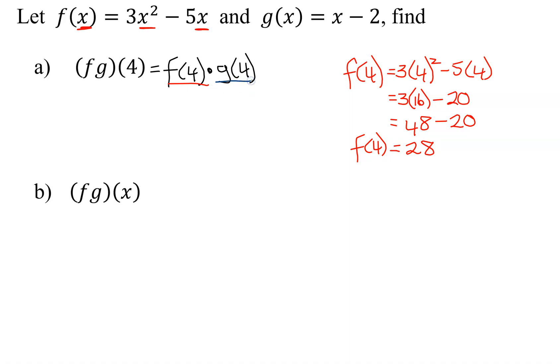Now I need to figure out g(4). g(4) is equal to—you go up to g and you put a 4 in for all the x's. So it's going to be 4 minus 2, which is 2.